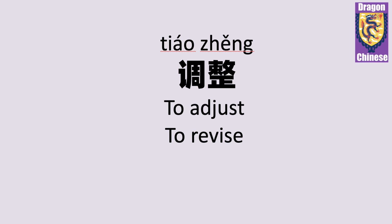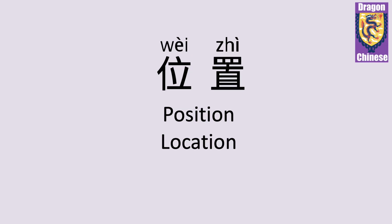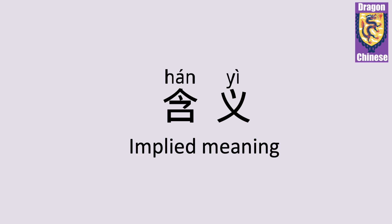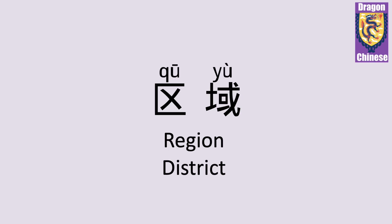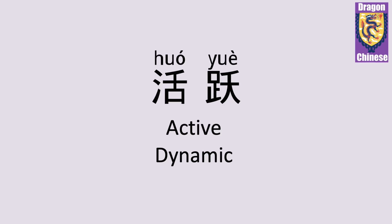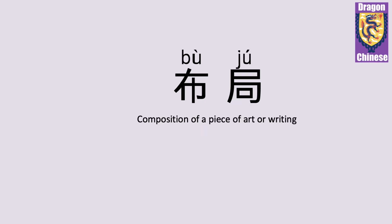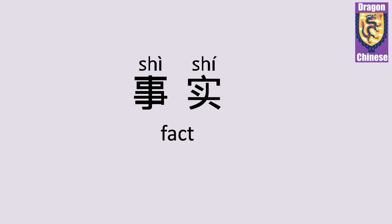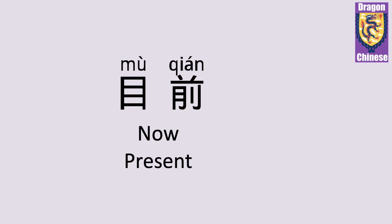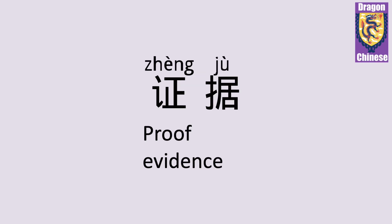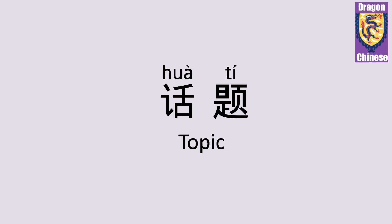调整 — to adjust, to revise. 调整. 位置 — position, location. 位置. 含义 — implied meaning. 含义. 区域 — region, district. 区域. 活跃 — active, dynamic. 活跃. 布局 — composition of a piece of art or writing. 布局. 事实 — fact. 事实. 目前 — now, present. 目前. 正据 — proof, evidence. 正据. 话题 — topic. 话题.